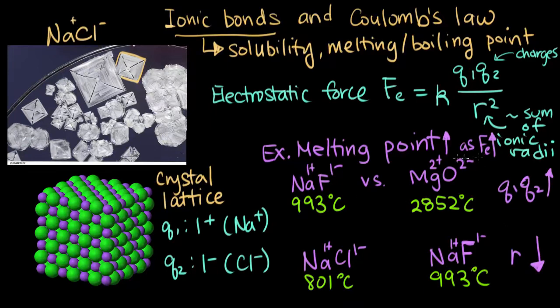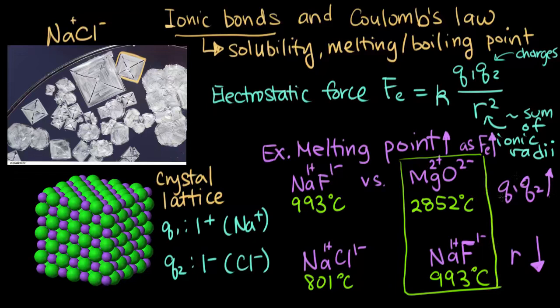In each of these pairs, the compound that has the higher melting point is the one that also has the higher electrostatic forces, and that's either because the charges are higher, Q1 and Q2 are higher, or because the distance between the ions went down. These are some examples for how we can relate the properties of ionic compounds to the electrostatic force using Coulomb's law between the cation and the anion.